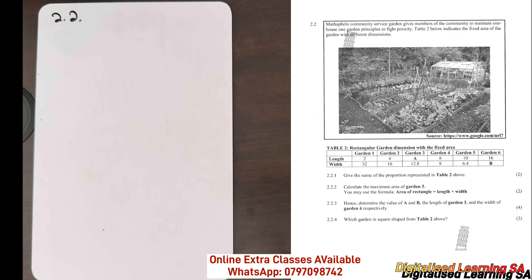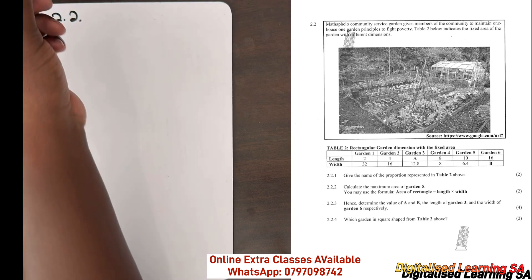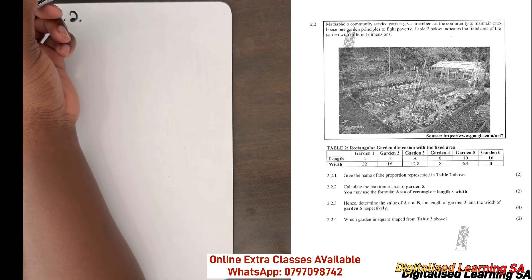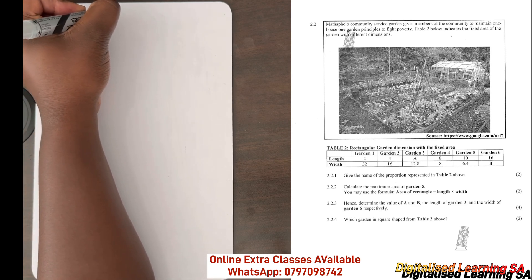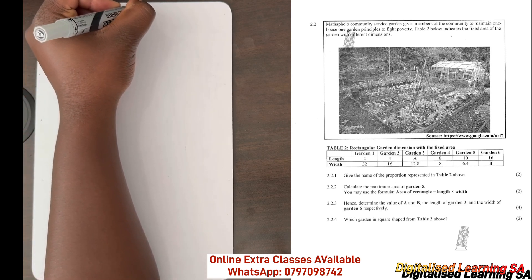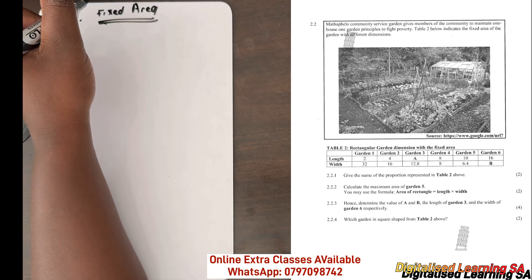We are going to start with question 2.2. We are told that Matapelo community service garden gives members of the community to maintain one garden. The principle is to fight poverty. Table 2 below indicates the fixed area of the garden with different dimensions. The fixed area means that for each garden the area will be the same — the area is fixed and the same for all the gardens.